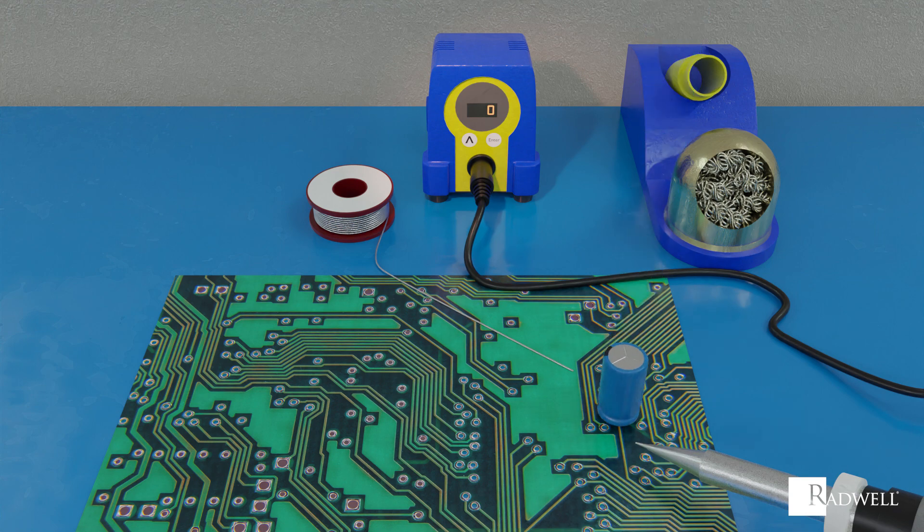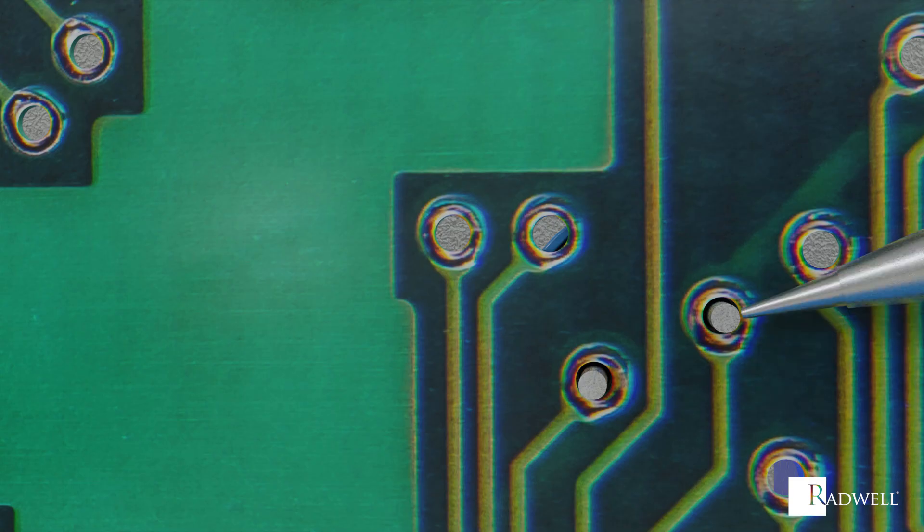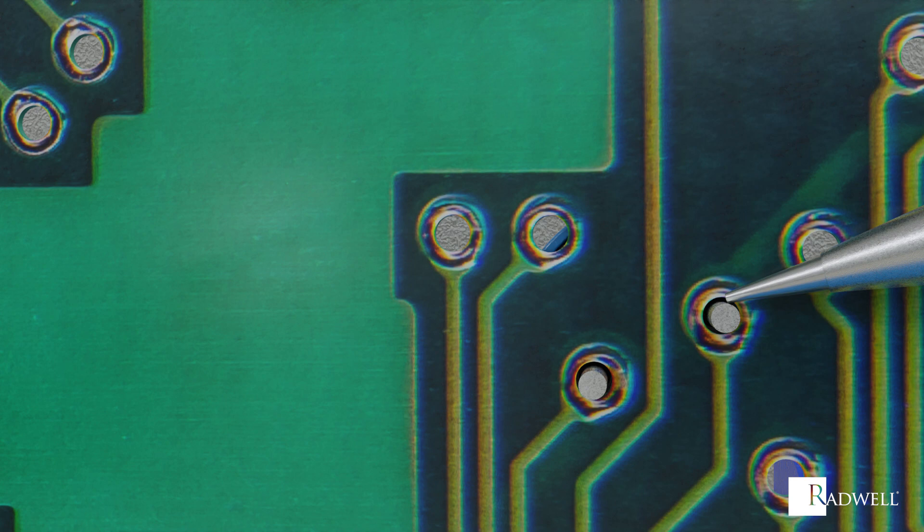First, the component being soldered to the board is inserted into the through holes. Next, the soldering iron is heated to the required temperature. Then, the lead and the contact pad are heated with the soldering iron. Without touching the iron, the solder is placed into the joint.